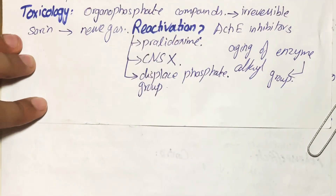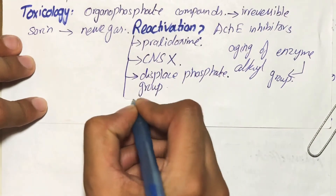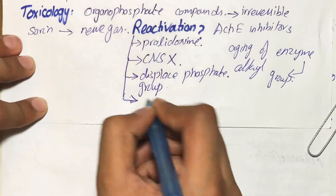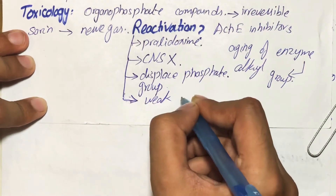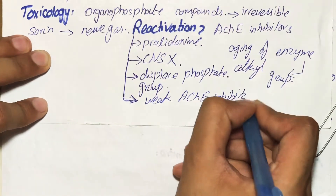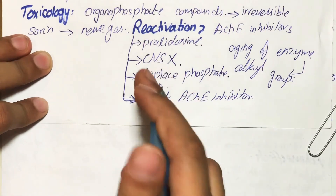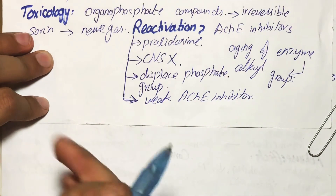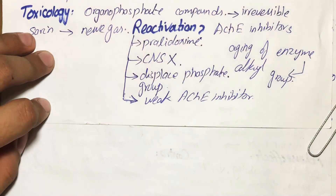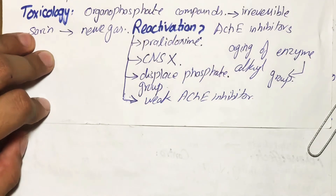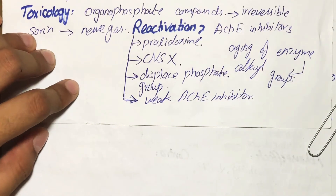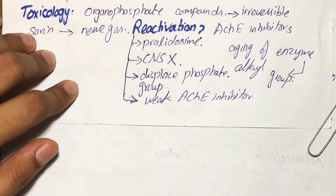Another important point is that pralidoxime is itself a weak acetylcholinesterase inhibitor. Therefore, it should only be given in therapeutic doses. If taken in higher doses, it can further cause acetylcholinesterase inhibition and worsen the condition.